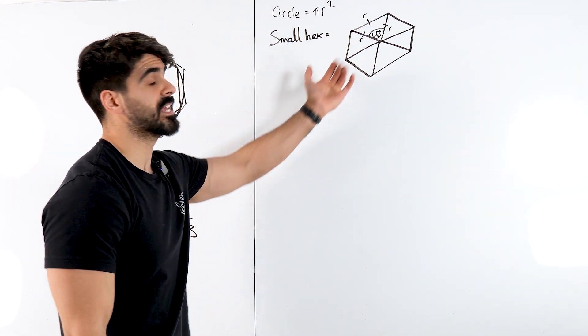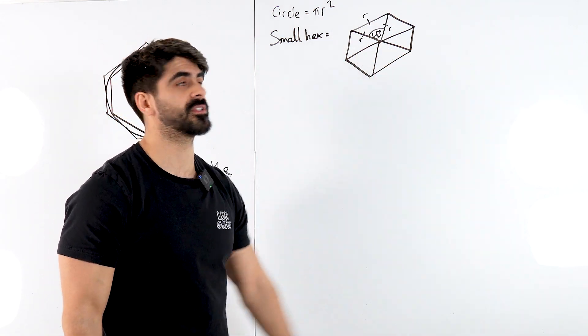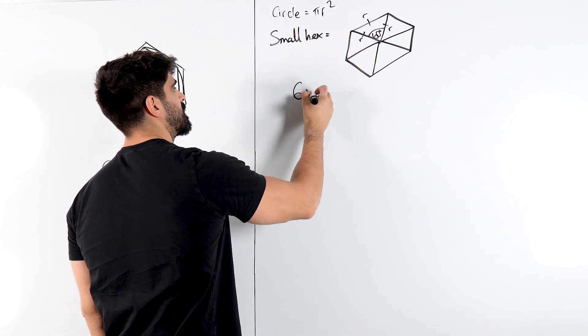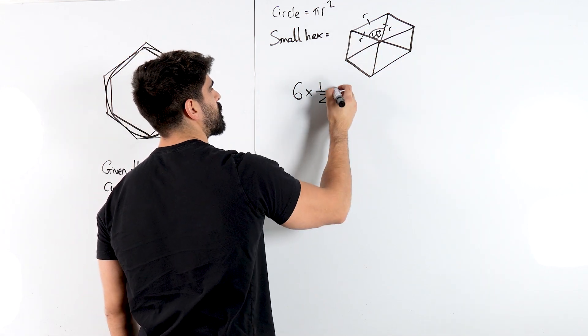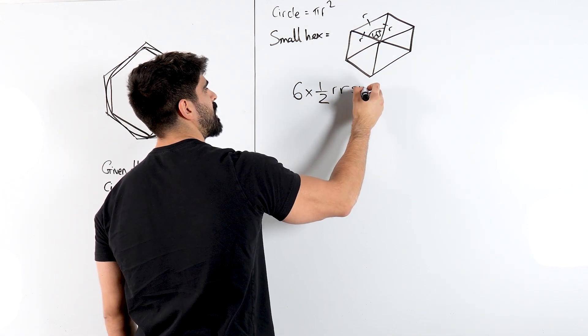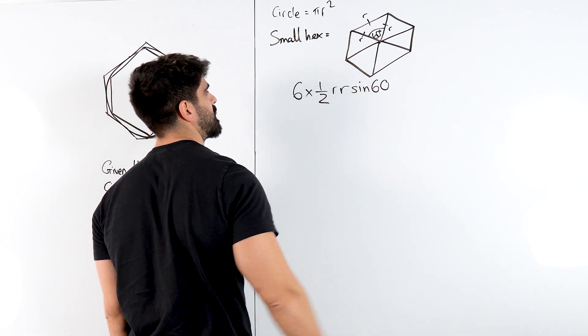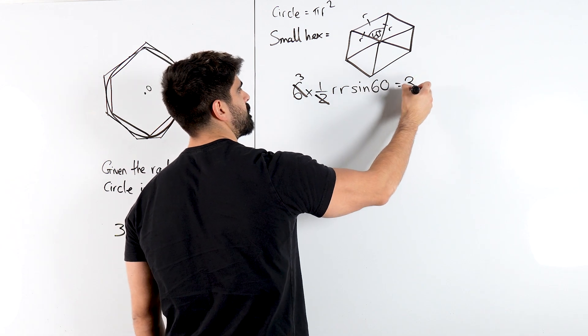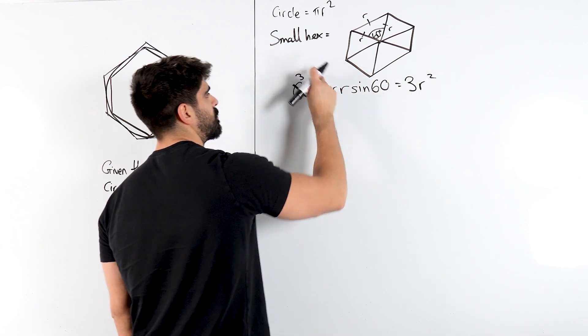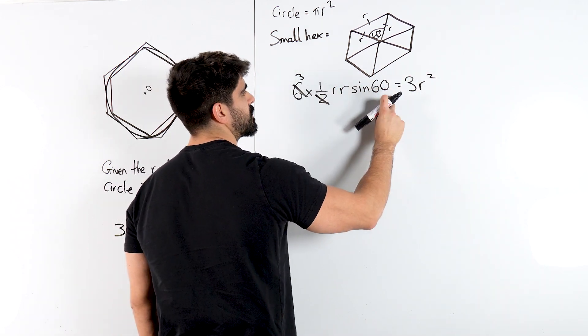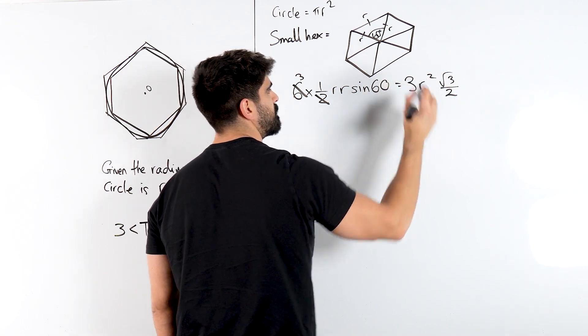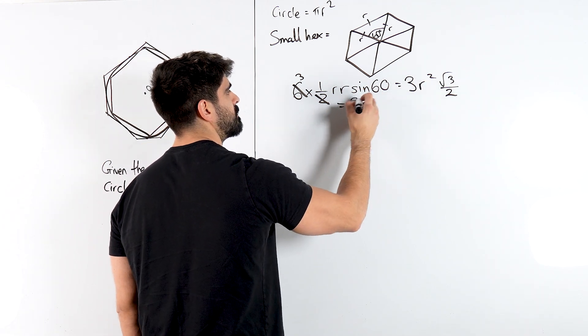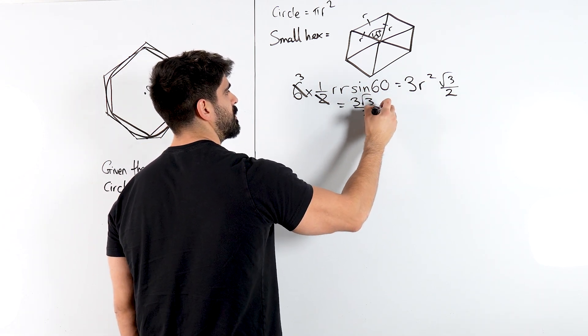So we can easily work out what the area of it is by just doing half ab sine c and then just timesing it by 6. So we're doing 6 lots of a half, ab, so r times r, sine of the angle 60 degrees. Now a half of 6 is 3, so we have 3r squared. Sine of 60 is root 3 over 2, you guys need to remember that.